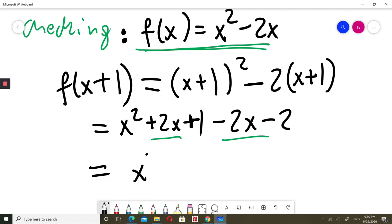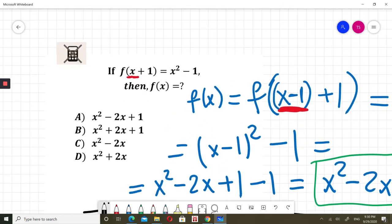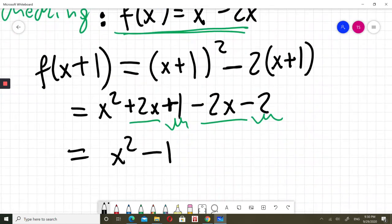So I have x squared, 1 minus 2 will be just negative 1. And let's check what was f of x plus 1. f of x plus 1 was x squared minus 1, which I got.